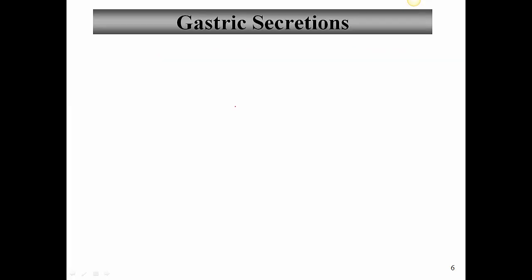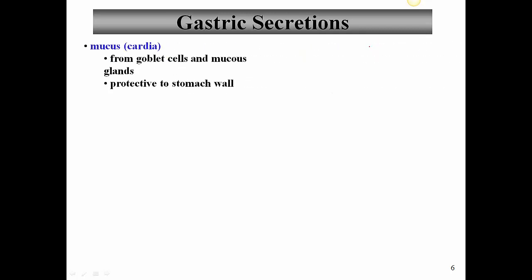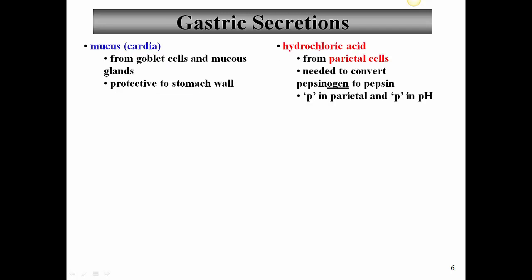Now let's turn our attention to the gastric secretions. We want to talk about the different kinds of cells in the gastric pits. We mentioned mucous cells, which are basically goblet cells as well as multicellular mucous glands — very important in protecting the stomach wall from digestion with acid and pepsin. The parietal cells secrete hydrochloric acid. This enzyme is very important in converting the inactive enzyme pepsinogen into pepsin, which is the active protein-digesting enzyme within the stomach.